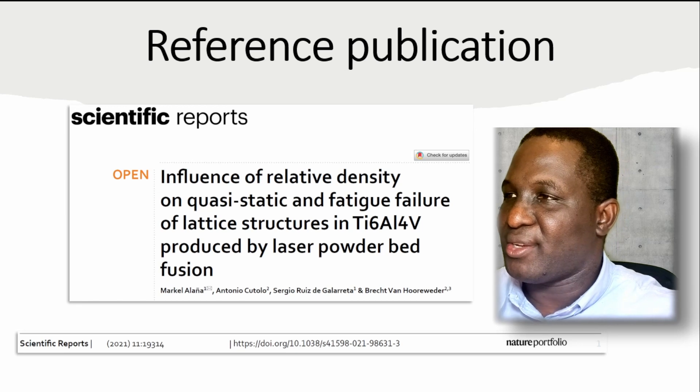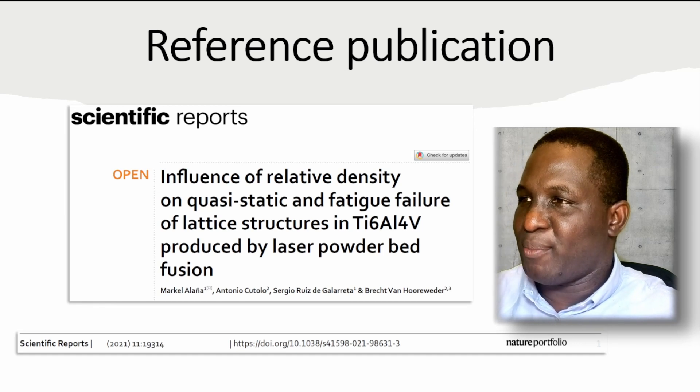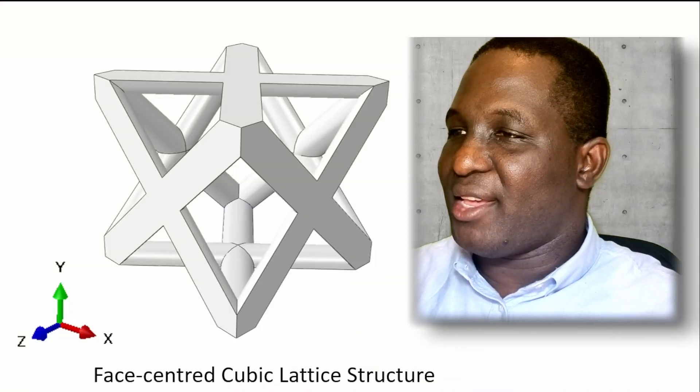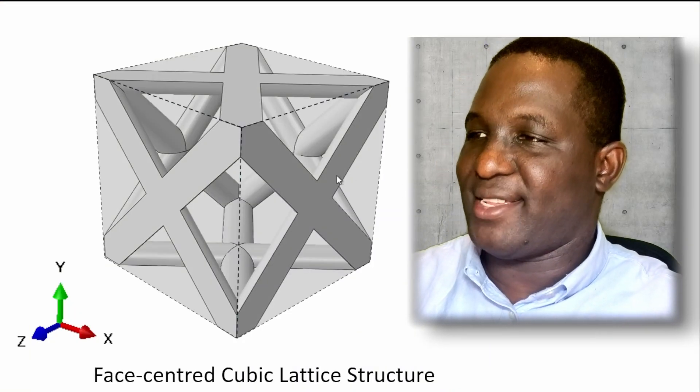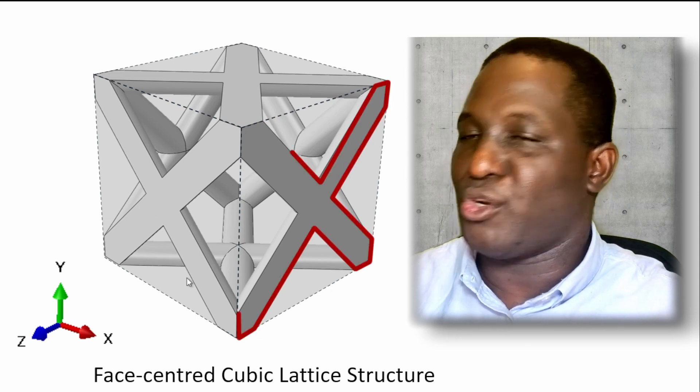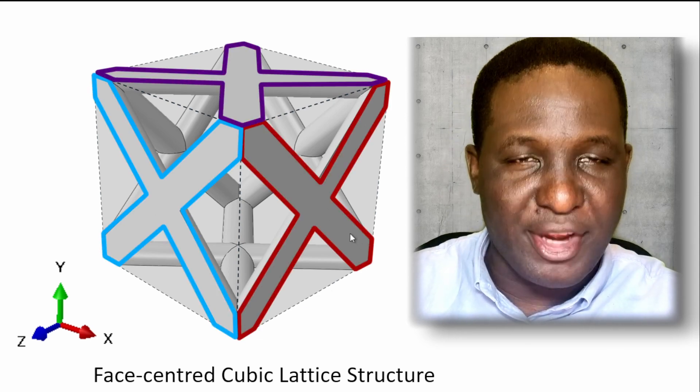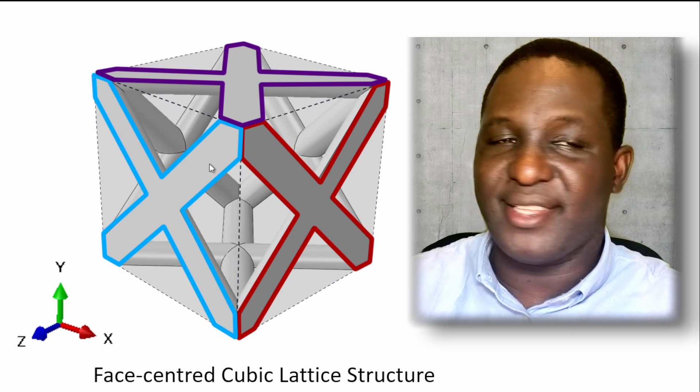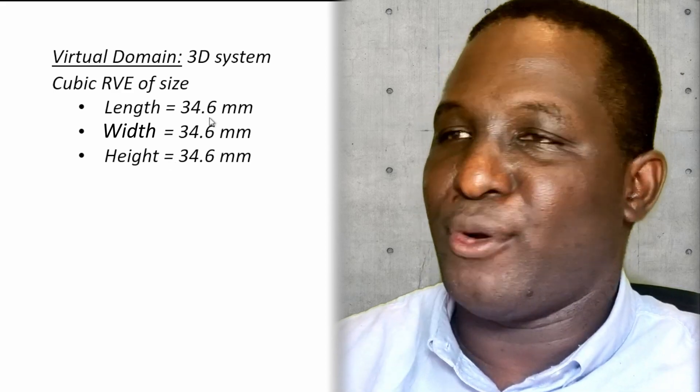As Megan begins the problem, she decided to consult a literature to help her. She is considering a scientific reports journal on this topic. The unit cell she wants to use is a single unit cell, and the key is that it has to be face-centered — meaning each face of the structure would have a face-centered arrangement on it. The candidate design is a 3D cubic arrangement with a length, width, and height of 34.6 millimeters.